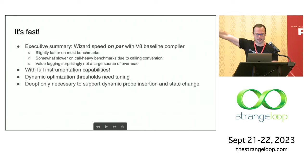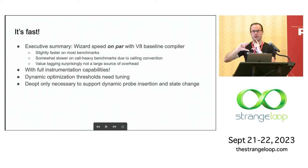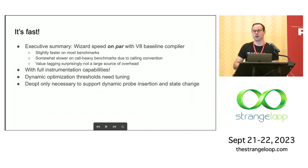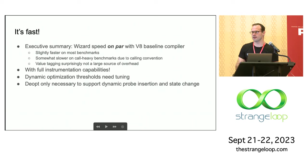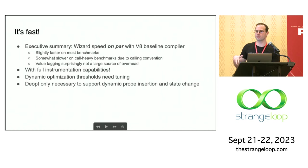The summary is it's fast — that should be qualified. It's not as fast as V8. It's as fast as V8's baseline compiler, a little bit faster on some benchmarks, but these are really in the same ballpark. Full instrumentation capabilities — when you write probes, insert probes, even remove probes and insert more later — it's all completely transparent. You can think of it like an interpreter and the JIT just kind of works in the background and makes your code faster. Deoptimization in Wizard's case only happens if you change the instrumentation, so it has predictable performance.